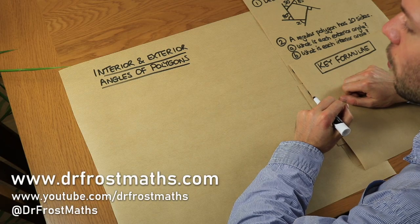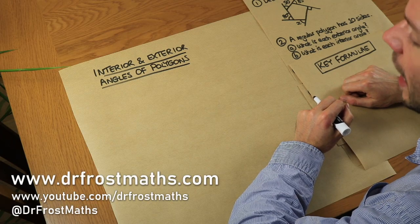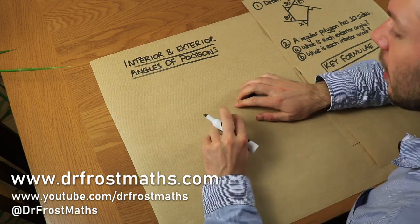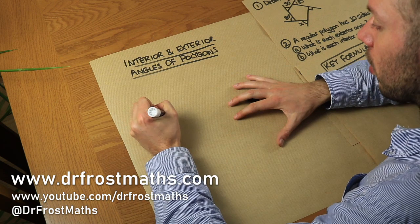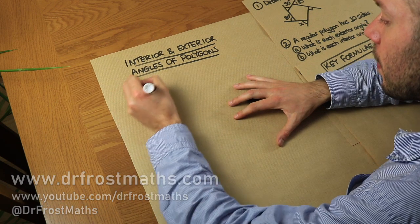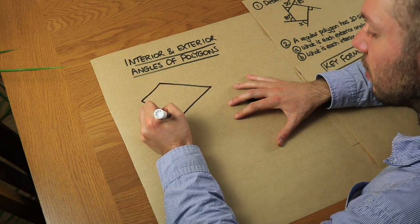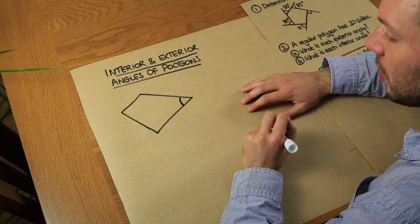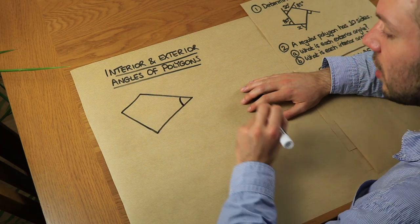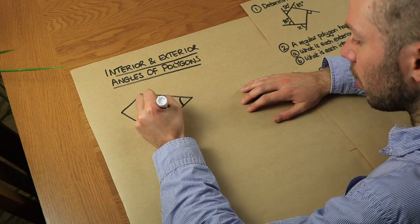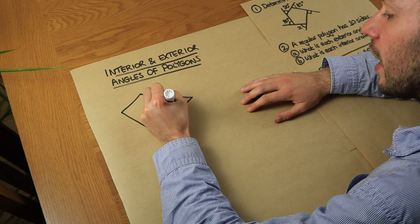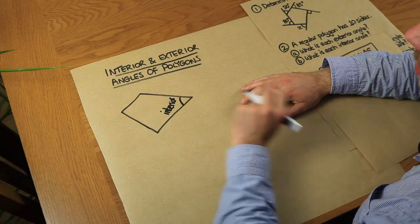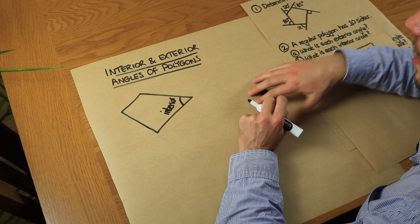Hello and welcome to this video on the interior and exterior angles of polygons. Now let's say we drew a polygon — in this case a quadrilateral — then any angle on the inside between two of the edges is known as an interior angle. That would be an interior angle, that's an interior angle, that's an interior angle, etc.